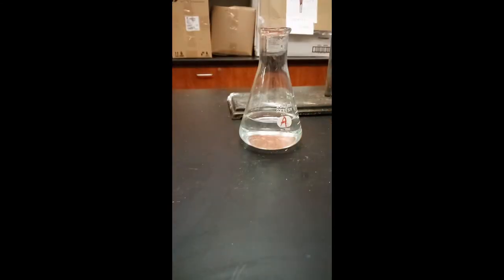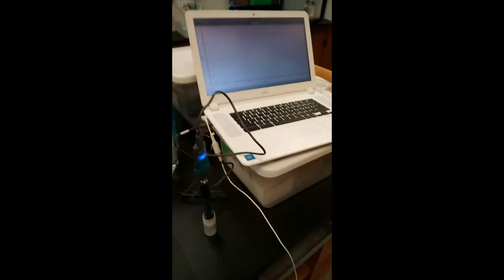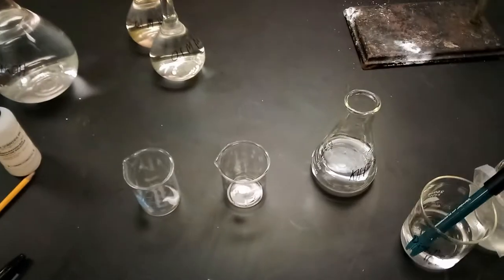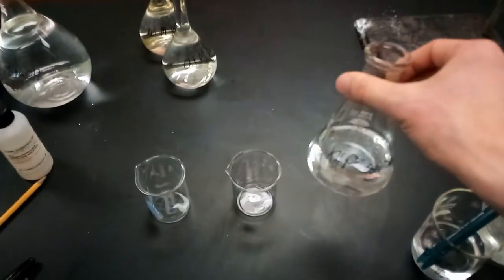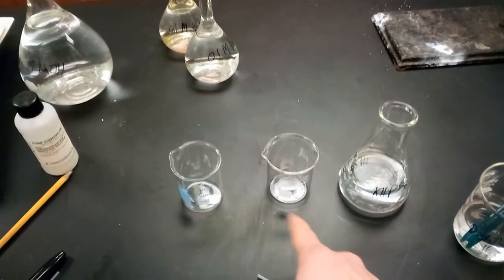Once your solution is made, what you want to do is get a pH probe properly hooked up to your computer like it is here. Then we'll be taking our KHP solution here and we'll be adding 25 milliliters or so into each one of these two beakers.